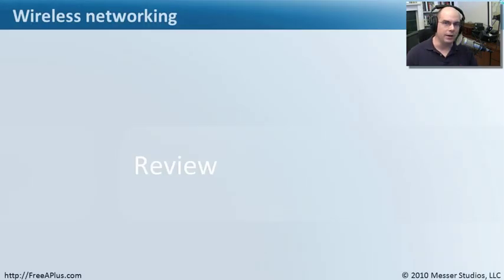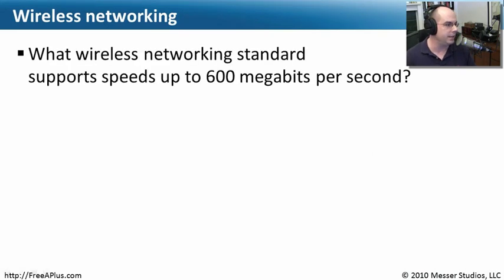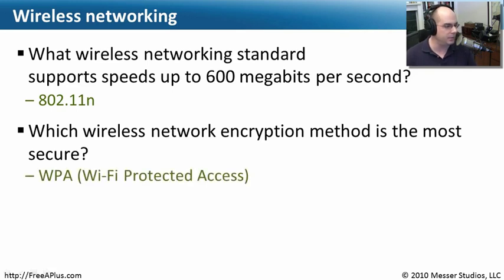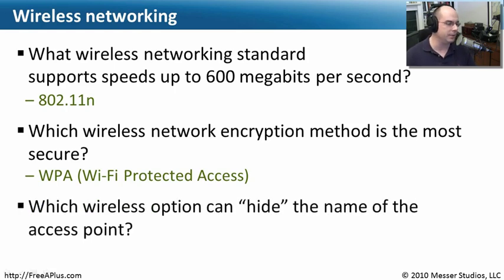Let's review what we've learned. First question: what wireless networking standard supports speeds up to 600 megabits per second? That's something relatively new — it is 802.11n. Next question: which wireless network encryption method is the most secure? We've talked about two encryption types: WEP and WPA. WPA — Wi-Fi Protected Access — is the most secure, and specifically WPA2 is the most protected wireless encryption methodology available.